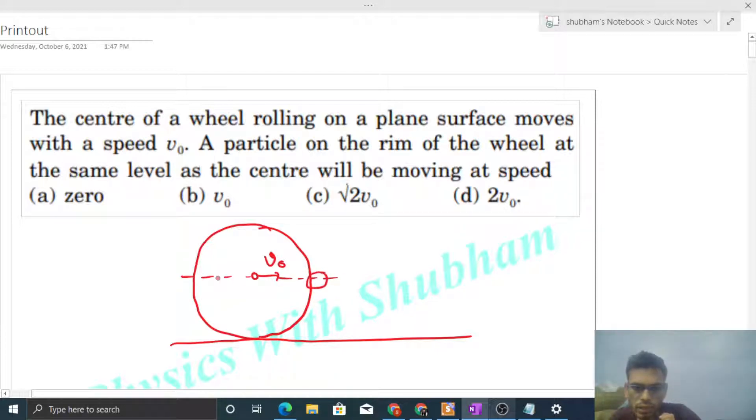So what will be their speed? During rolling there are two speeds: one is the center of mass speed which all particles have. So this particle will also have v0 and this one will also have v0 in the forward direction. But there is another speed due to rotation about the center of mass.